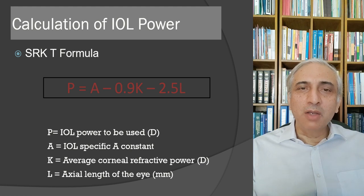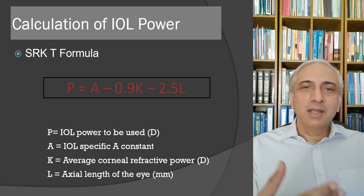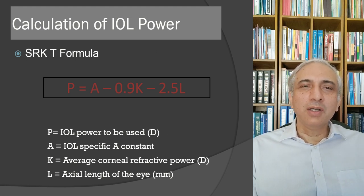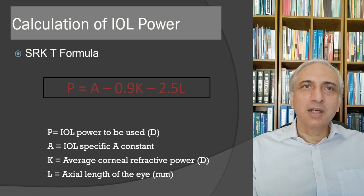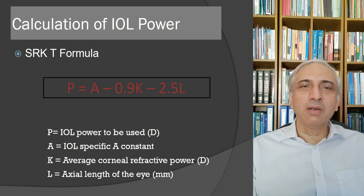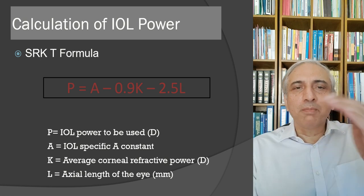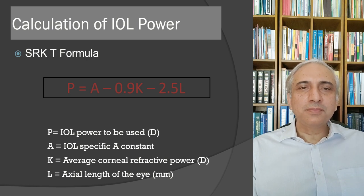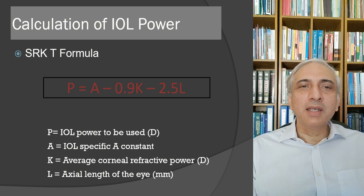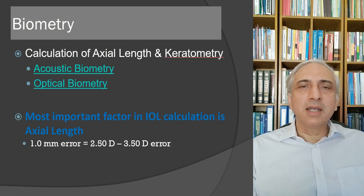The initial theoretical formula was the SRK/T formula: P (IOL power) = A (IOL constant provided by the manufacturer) − 0.9 × K (average keratometry reading in diopters) − 2.5 × L (axial length). Axial length has the highest predictive factor — a 1 mm error in axial length produces a 2.5 to 3.5 diopter error in IOL power calculation.